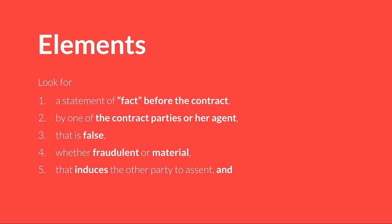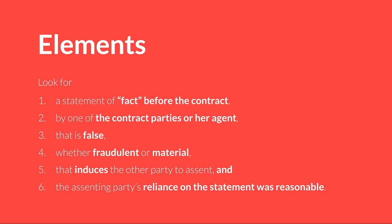That statement must induce the other party to assent to the agreement. When we say 'induce,' you'll see other places using the phrase 'actual reliance' — meaning did the party actually rely on this representation when they assented to the agreement. We then ask whether that inducement or reliance was reasonable or justifiable. Those are our elements. Let's look at an example to get the basic idea out there, and then we'll look at each element.